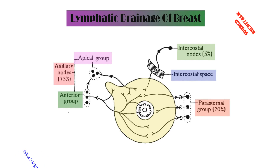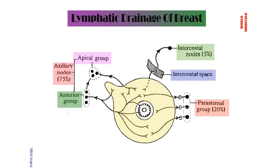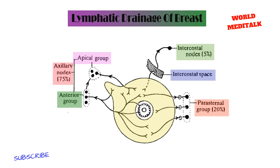The posterior intercostal lymph nodes lie in front of the head of the ribs.